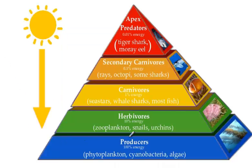At the very bottom, we have the producers. In this case, we have phytoplankton, cyanobacteria, and algae. Those are not producers that we would normally be familiar with, but this is a marine ecosystem, so it's not something that we come in contact with as often. Producers get their energy from the sun. They make their own food through the process of photosynthesis.